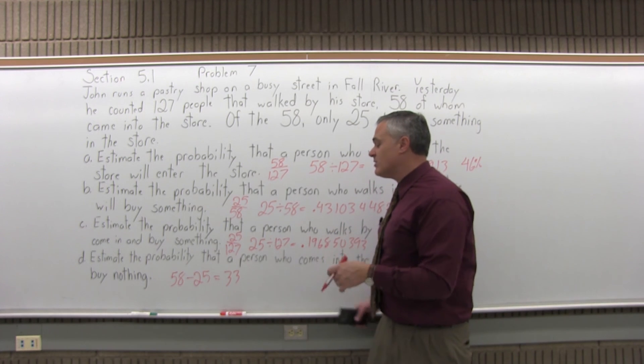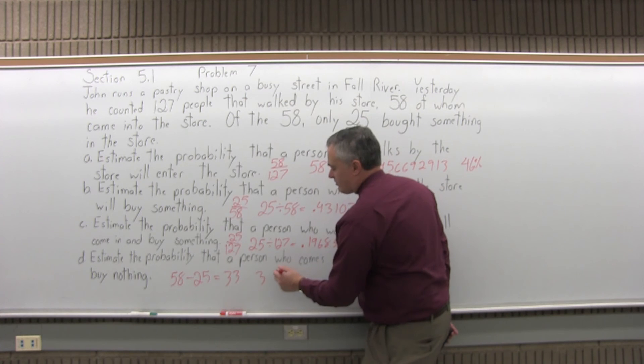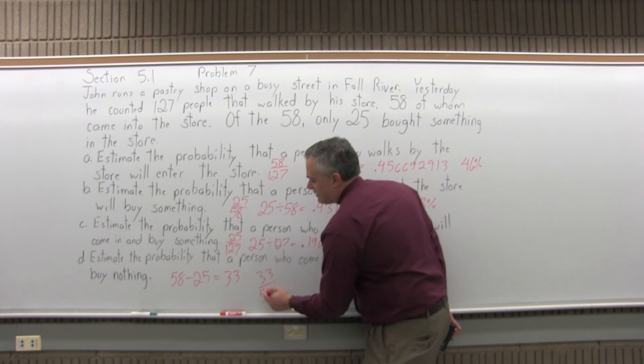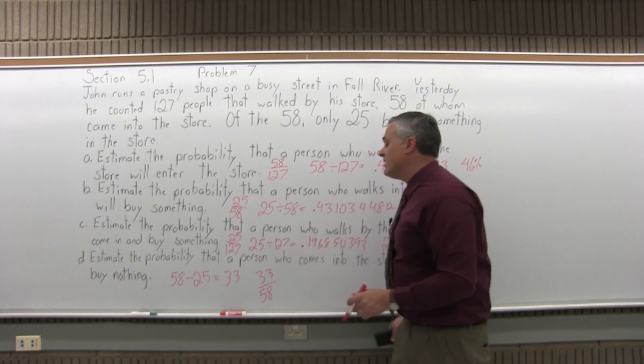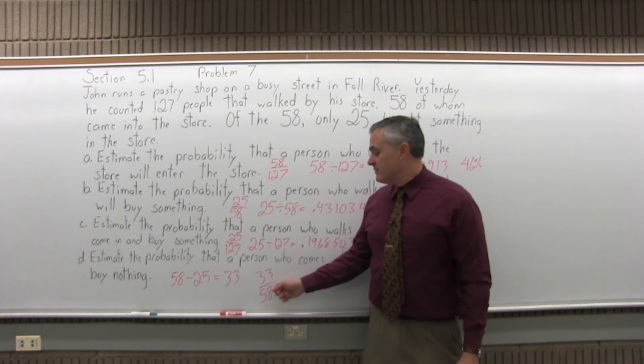They looked around or came in with a friend but didn't buy anything. The probability is 33 over 58 - 33 who didn't buy out of 58 that came in. This doesn't reduce, but you can convert it to a decimal.